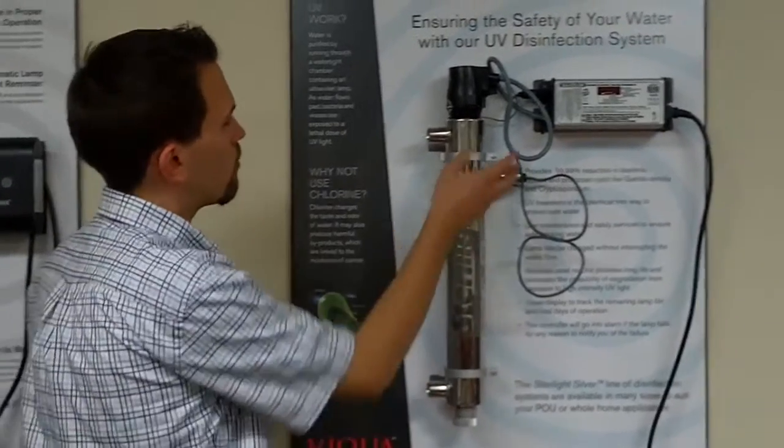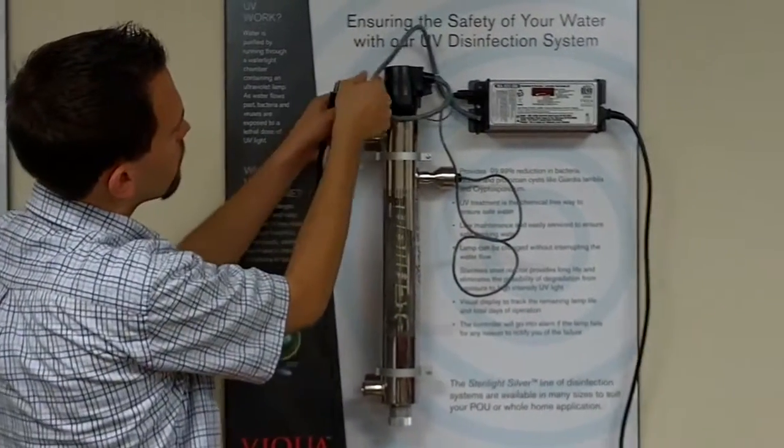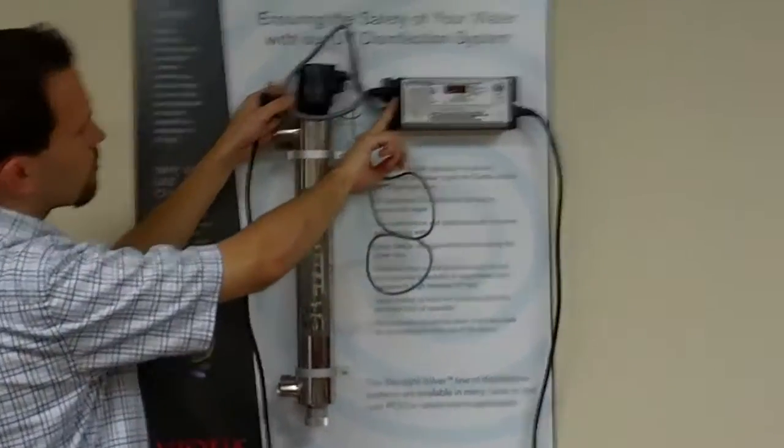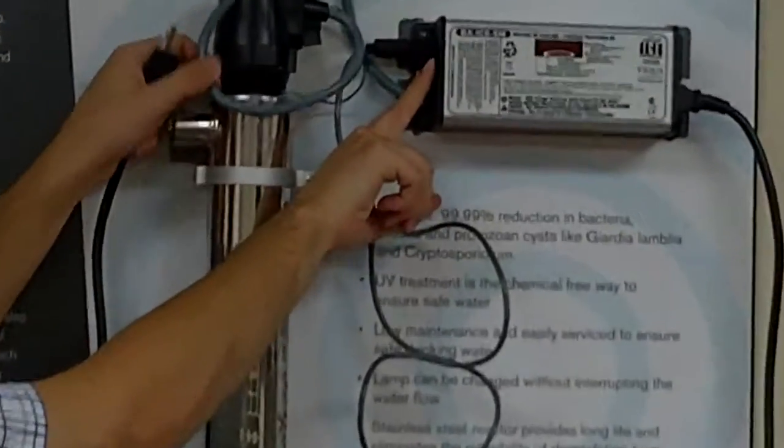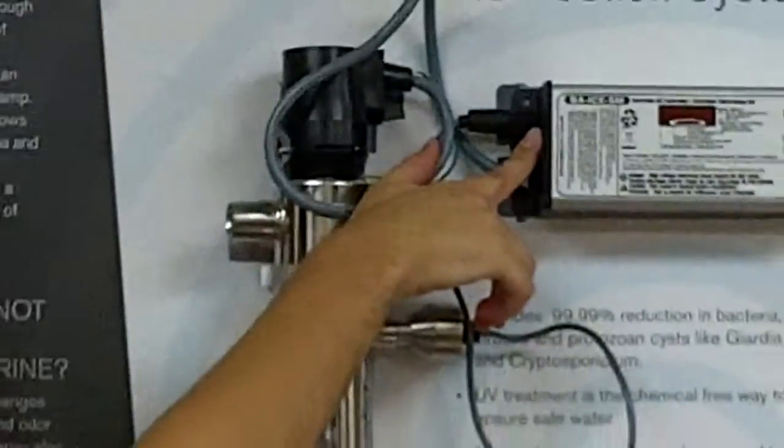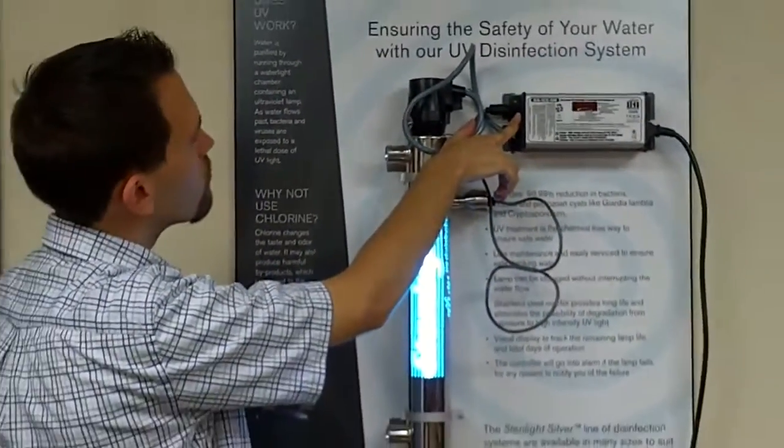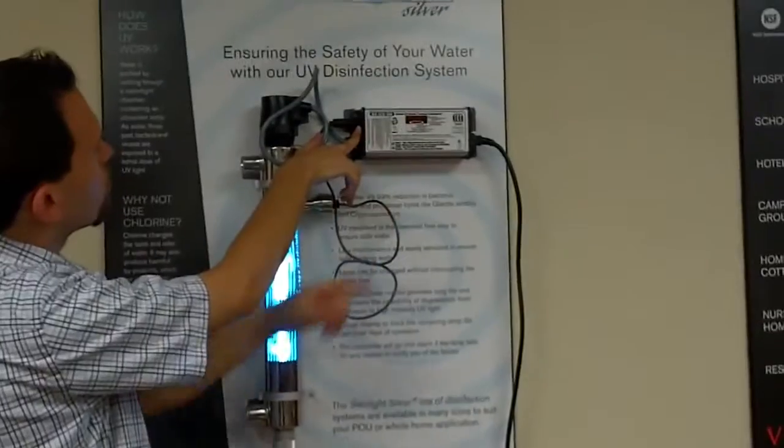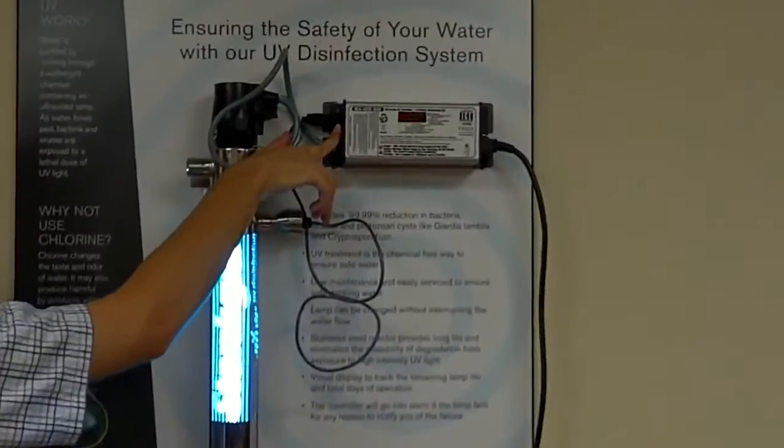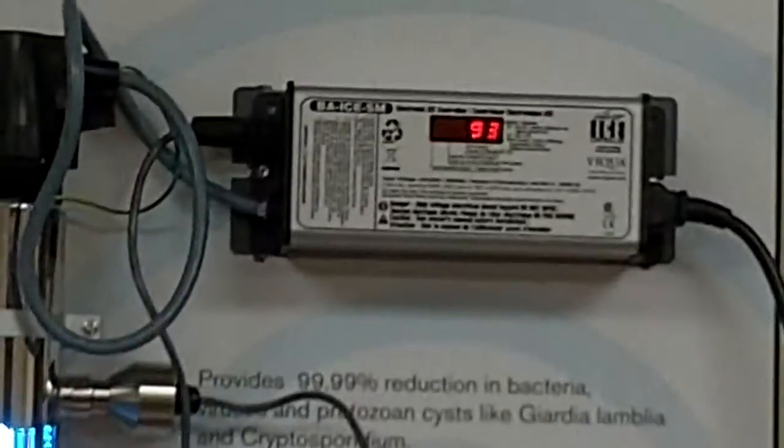And so to do that, you're going to want to hold the little black button. It's just right here on the side of your power supply. You just want to hold that button down while you plug it into power. And you will see the power supply will show our set. That means it has reset the lamp counter. You can let go.